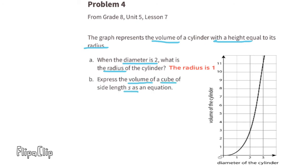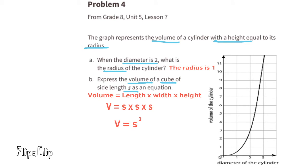Part B. Express the volume of a cube of side length S as an equation. Since volume equals length times width times height, we can write the equation: volume equals S times S times S. Essentially, the volume equals S cubed, or S to the power of 3.